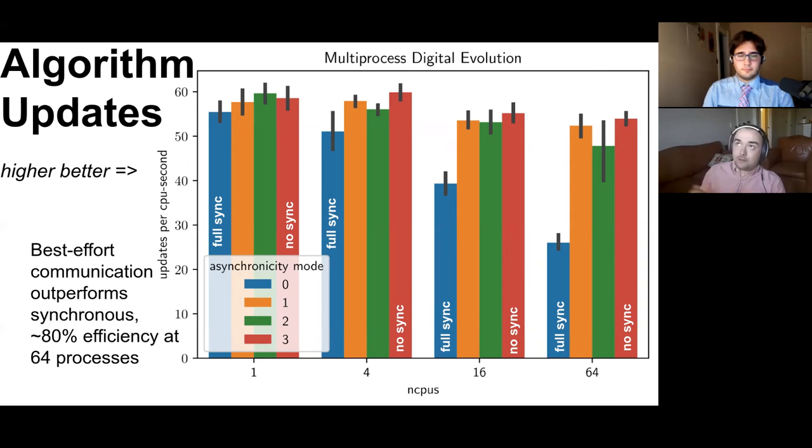When we got up to 64 processes with fully synchronous communication we only had about 50 percent efficiency.